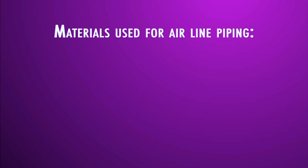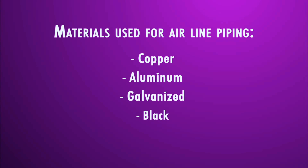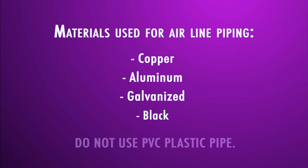Materials commonly used for airline piping: copper, aluminum, galvanized, black — and never, ever use PVC or plastic pipe.